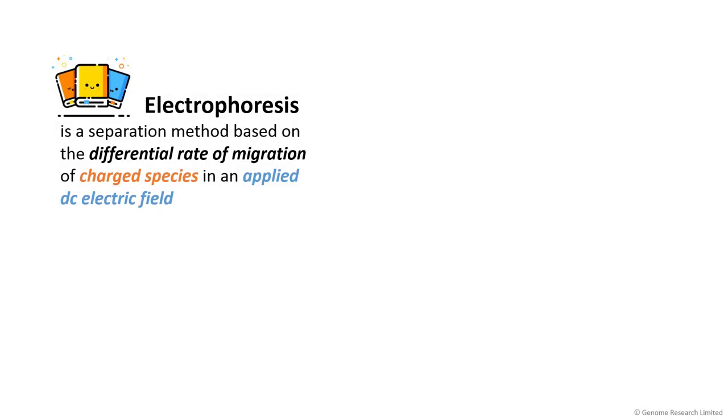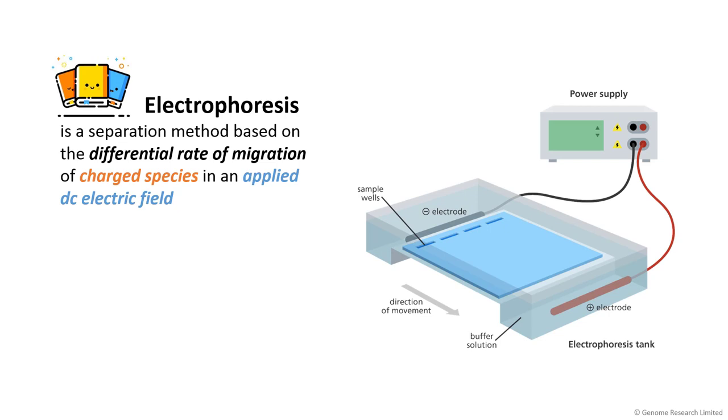By definition, electrophoresis is a separation method based on the differential rate of migration of charged species in an applied DC electric field. This simply means that the negatively charged DNA fragments will move through the medium at different speeds when we apply an electric field.